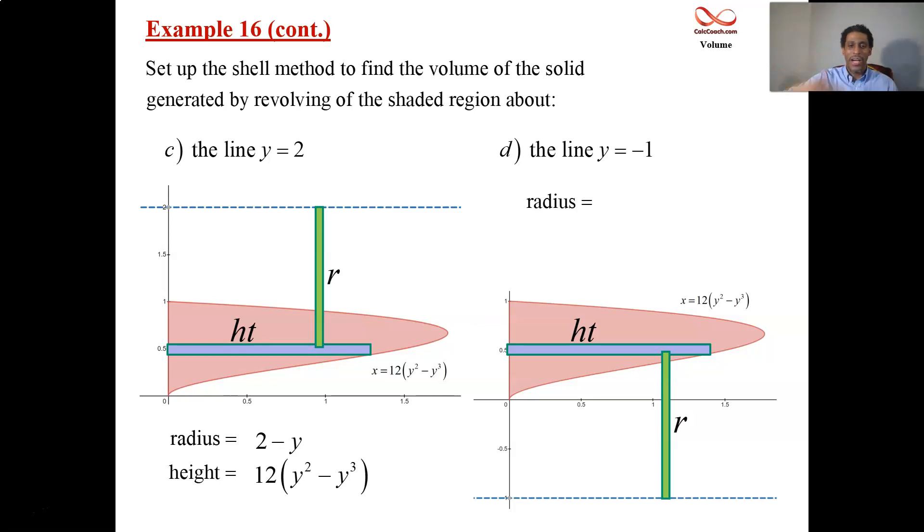One takes you up to the x-axis. And then we're going to need a y to take you up to the rectangle. One plus y is the radius. And the height's still the same height.